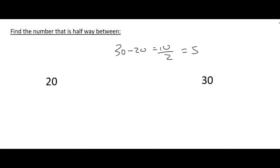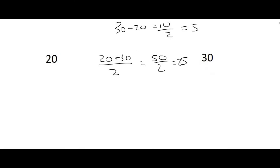Let's go straight to the answer by adding the two numbers together and then dividing that by 2. So 20 plus 30 is 50. Divide that by 2 and you get 25. That is how you work out the midpoint of two numbers: you add them together and you divide by 2.